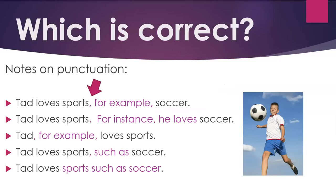Notes on punctuation: with the phrases 'for example' and 'for instance,' you need to have a period or a comma before the phrase and a comma after. For example: 'Tad loves sports, for example, soccer' — here the example is not a complete sentence. 'Tad loves sports. For instance, he loves soccer' — here the example is a complete sentence.